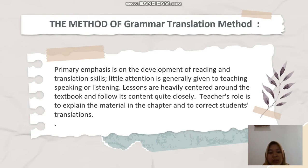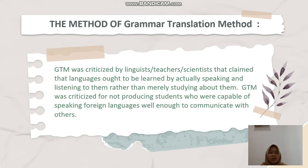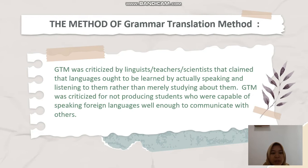Primary emphasis is on the development of reading and translation skills. Little attention is generally given to teaching speaking or listening. Lessons are heavily centered around the textbooks and follow its content quite closely. The teacher's role is to explain the materials in the chapter and to correct students' translations. GTM was criticized by linguists and teachers, claiming that language ought to be learned by actual speaking and listening rather than merely studying about them. GTM was criticized for not producing students capable of speaking the language or communicating with others.